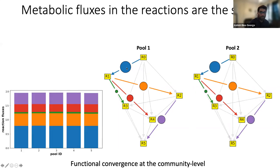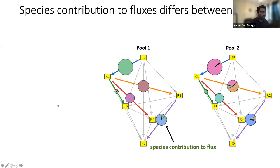An environment is determined by the set of resources, their energies, the energy assimilated in each reaction, and the most energetic resource R0 which is supplied. The species themselves differ in terms of their enzyme budgets, allocation, and enzyme kinetics. Once you allow these species to grow, you would expect different reactions to get preferred in different species pools. However, what we find is that species surviving the ecological competition in different pools choose to use the same subset of reactions. This bar plot shows the fluxes in these different reactions, and it is highly similar across pools.